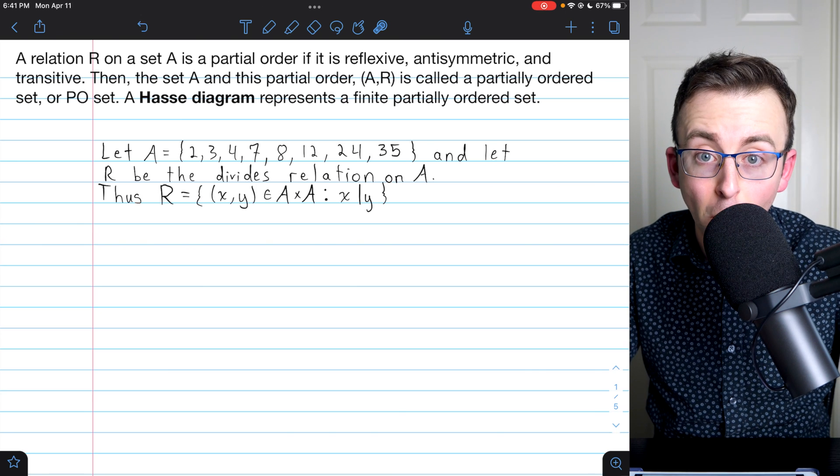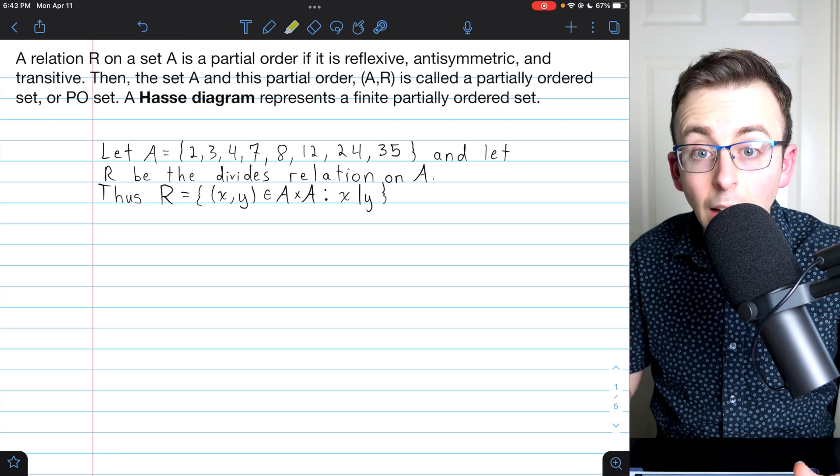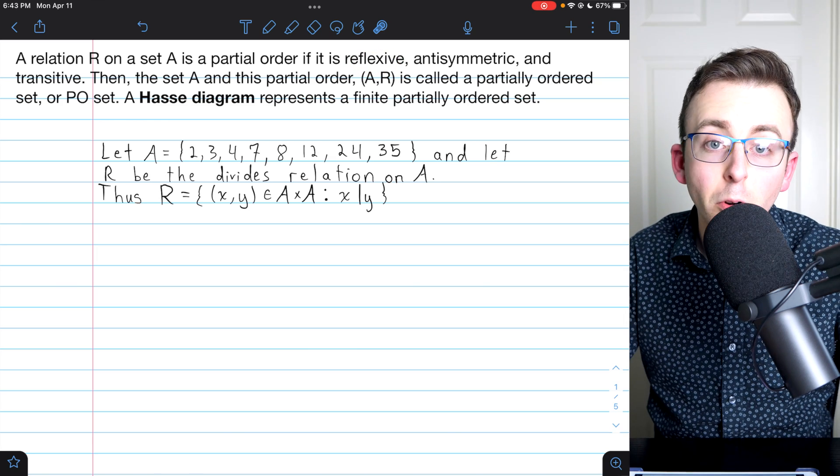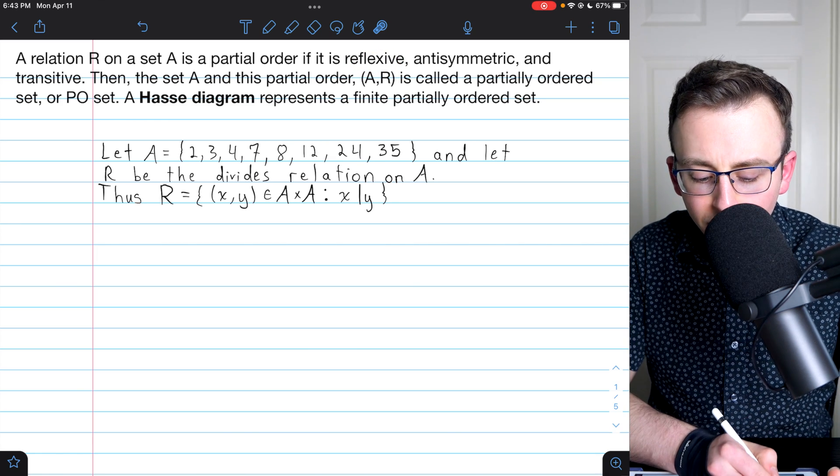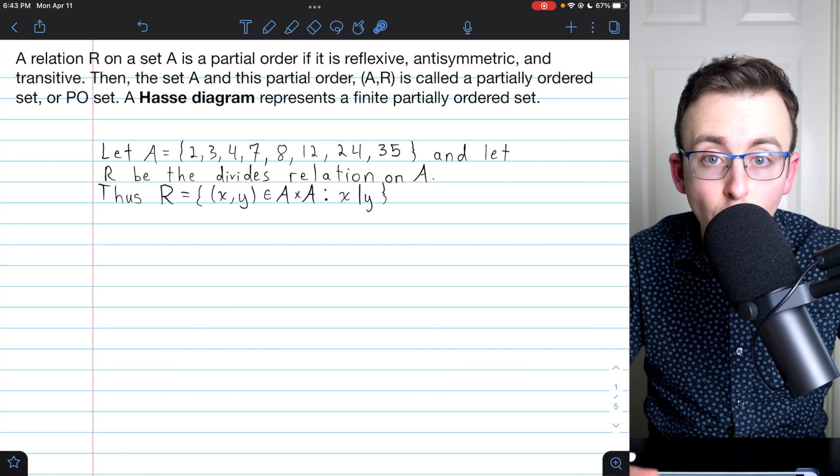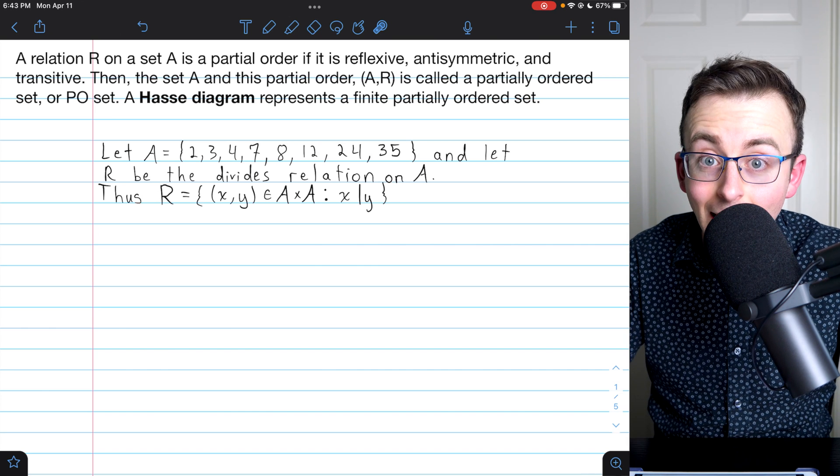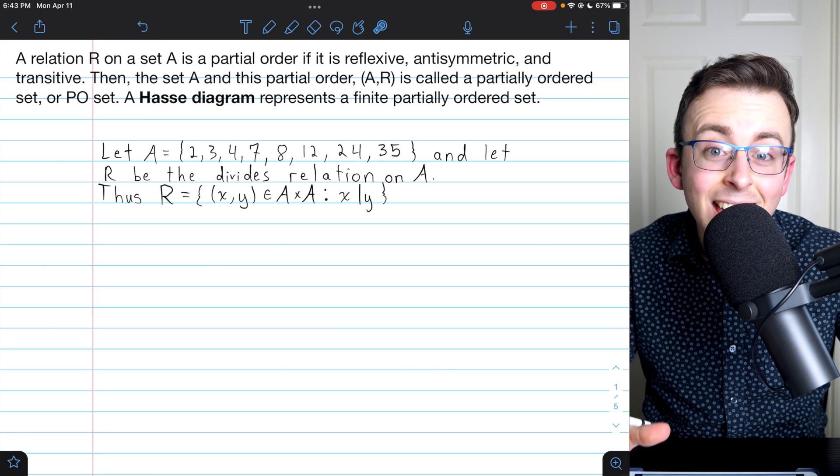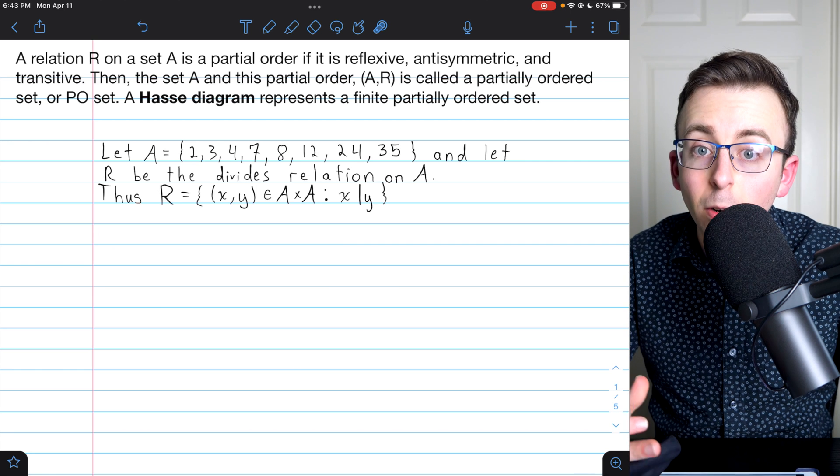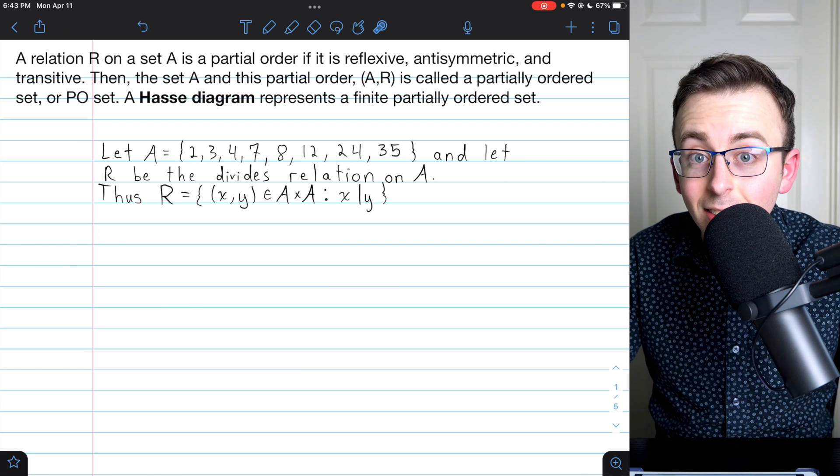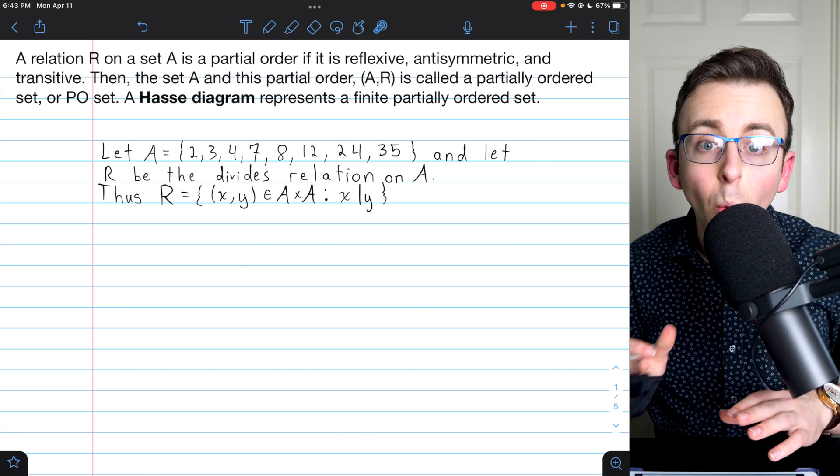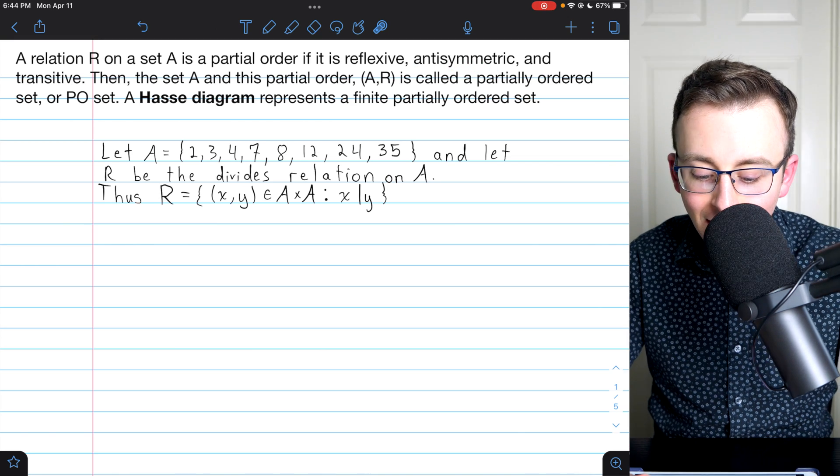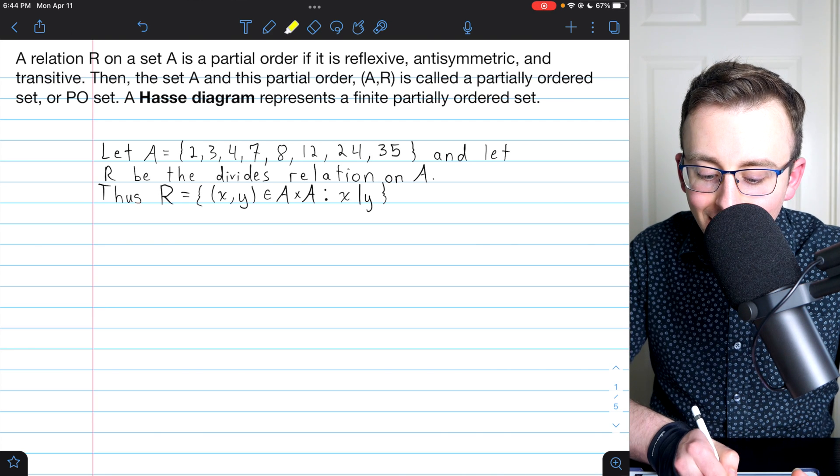As your quick review for what this partial order stuff is, you probably know what it means for a relation to be reflexive - every element relates to itself. You also probably recall what it means for a relation to be transitive - if X relates to Y and Y relates to Z, then X relates to Z. Now for it to be a partial order, it also has to be antisymmetric. That means that no distinct elements can relate to each other symmetrically. So if X and Y are distinct elements, X might relate to Y, but if so, Y can't relate to X. So if a relation has all these properties, then it is a partial order.